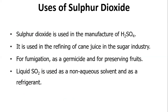The uses of sulfur dioxide: it is used in the manufacture of sulfuric acid by the contact process. It is used in refining of cane juice in the sugar industry, in fumigation as a germicide, and in preserving fruits. Liquid sulfur dioxide is used as a non-aqueous solvent and as a refrigerant.